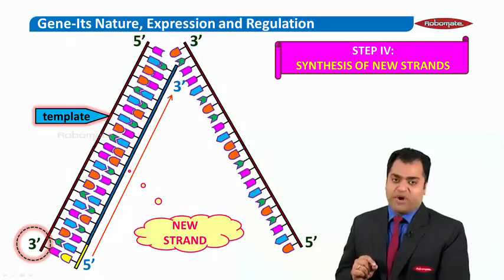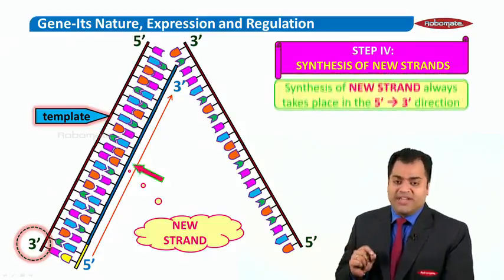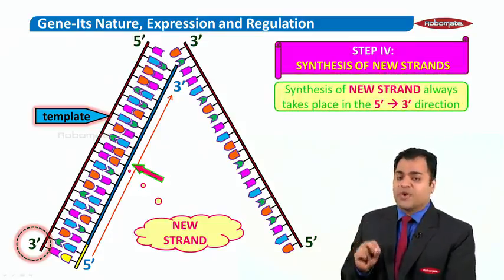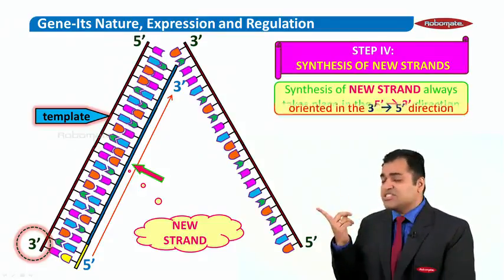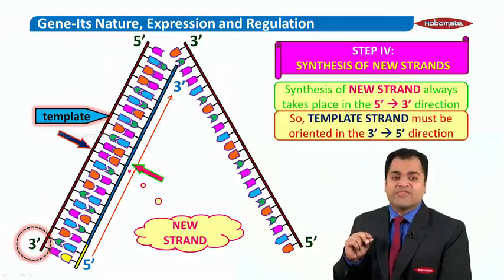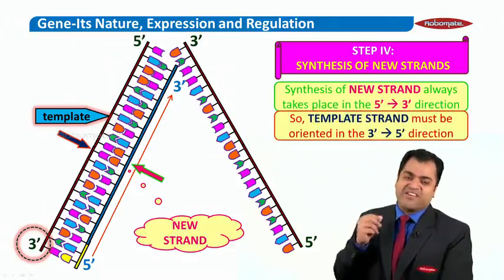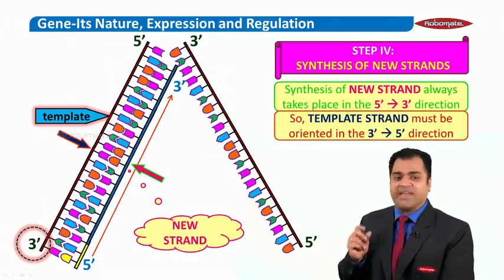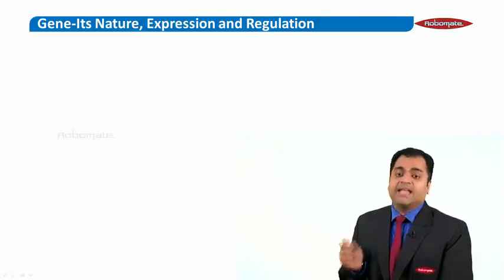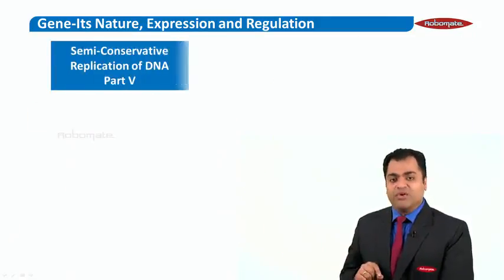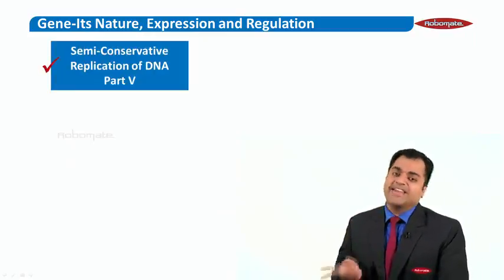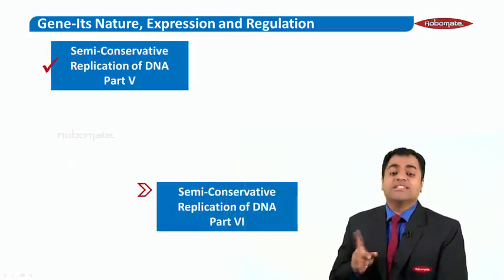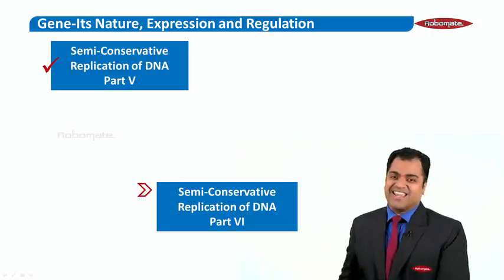Notice something very important here. The new strand of DNA is always synthesized from 5 prime to 3 prime direction, which means the template strand should always be oriented from 3 prime to 5 prime direction. You have to make note of this. This brings us to the end of module number 5 on semi-conservative replication of DNA. In the next module, I will be talking about the sixth part of semi-conservative replication of DNA. Thank you and take care.